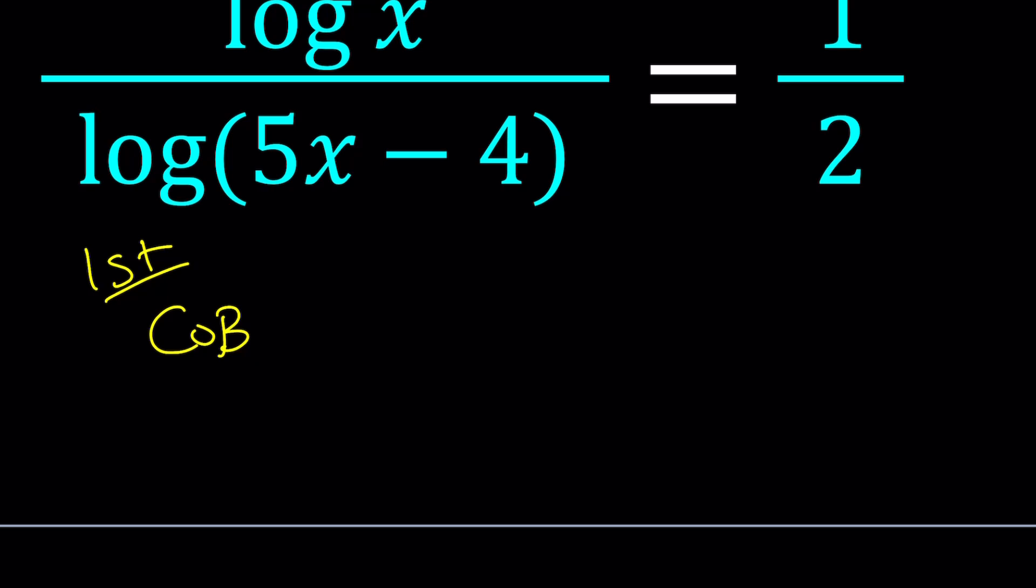So let that be our first method. We're going to use change of base. So I'm going to write this as log of x. This is going to be the top number, base 5x minus 4. Awesome. Now, what does this mean? This means that I have a log expression, a single one, but the base is kind of interesting, a different one.